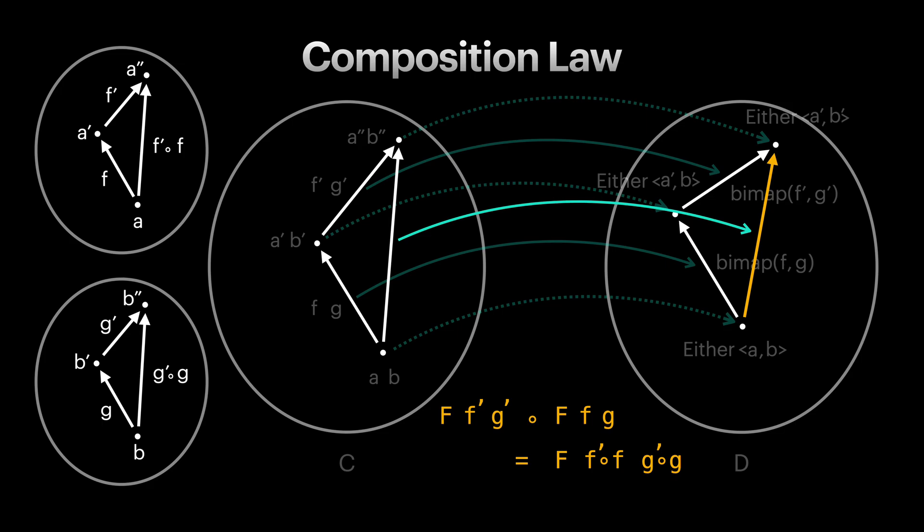These laws ensure that bifunctors are consistent and predictable when mapping over both type parameters simultaneously. As you see, bifunctor laws are actually functor laws extended for two type parameters.